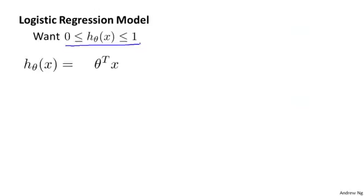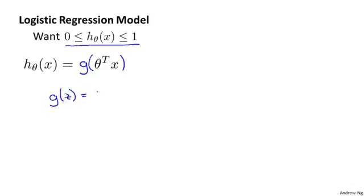When we were using linear regression, the form of the hypothesis was h of x equals theta transpose x. For logistic regression, I'm going to modify this a little bit and make the hypothesis g of theta transpose x, where I'm going to define the function g as follows: g of z, where z is a real number, is equal to 1 over 1 plus e to the negative z.